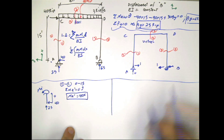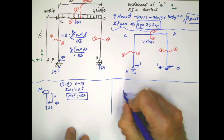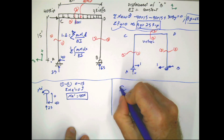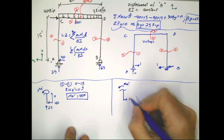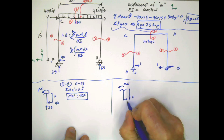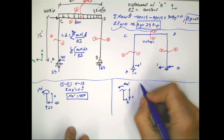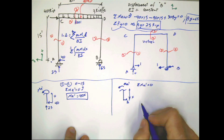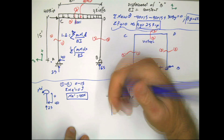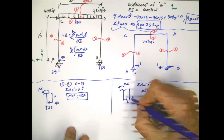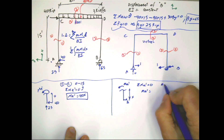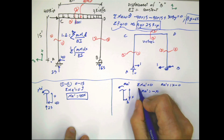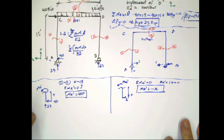Now for the virtual structure, I do the same: place the member, apply the unit force, make the cut, and call the moment m_a'. Doing summation of moments at the cut: m_a' plus 1·x equals zero, so m_a' equals negative x. That's the equation for section 1-1 in the virtual structure.